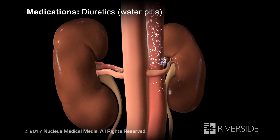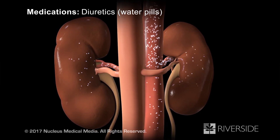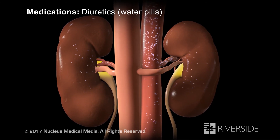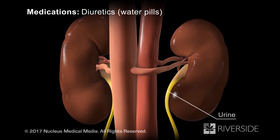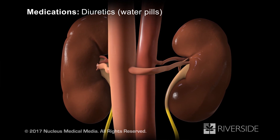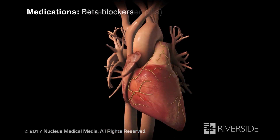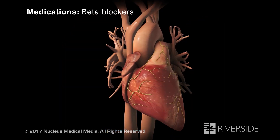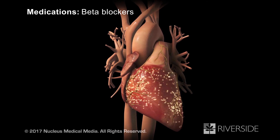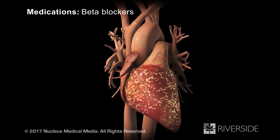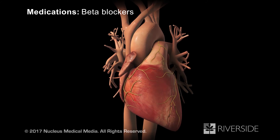Diuretics, commonly called water pills, cause your kidneys to move more salt and water from your blood into your urine, which reduces your blood volume and pressure. Beta blockers reduce the workload on your heart by decreasing both the rate of your heartbeat and the strength of your heart's contractions.